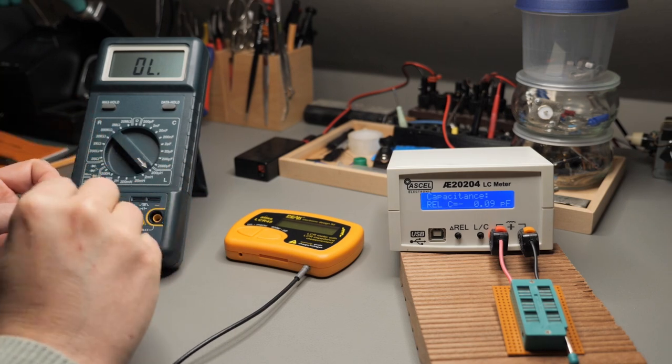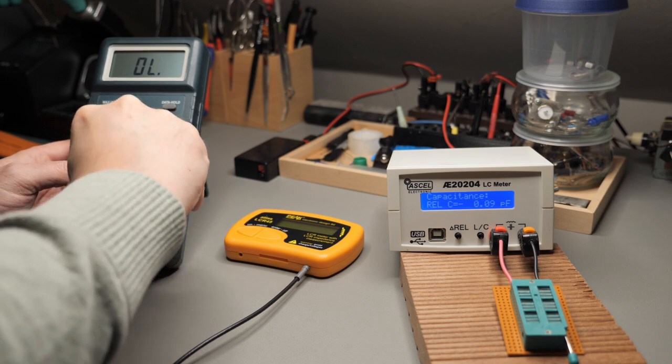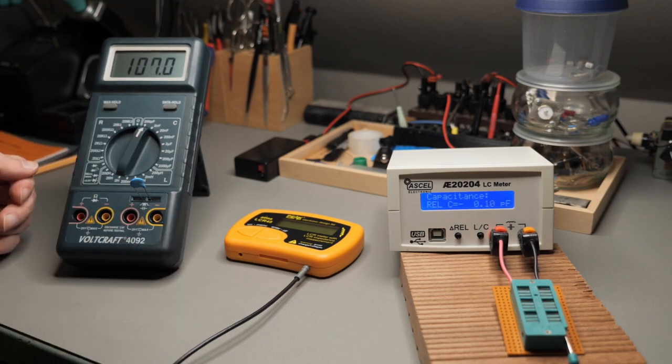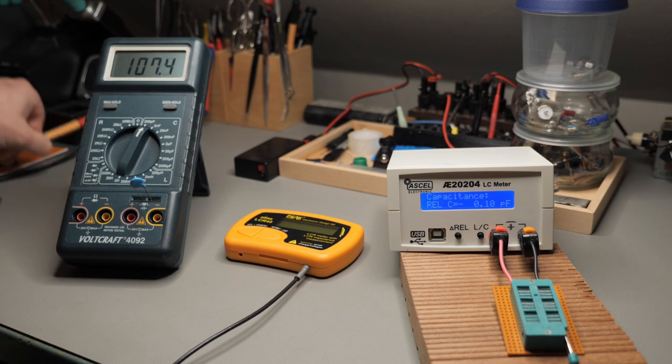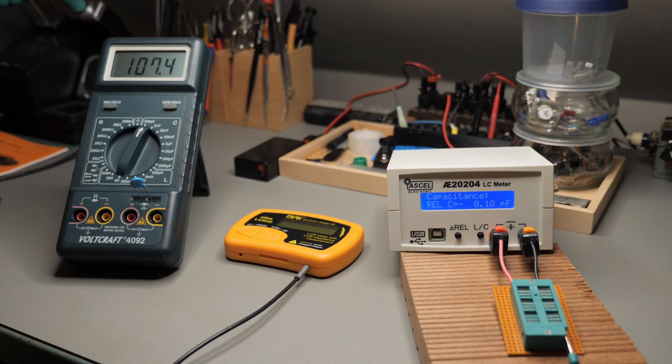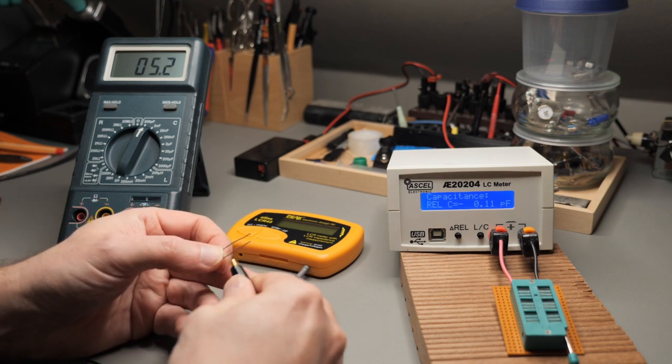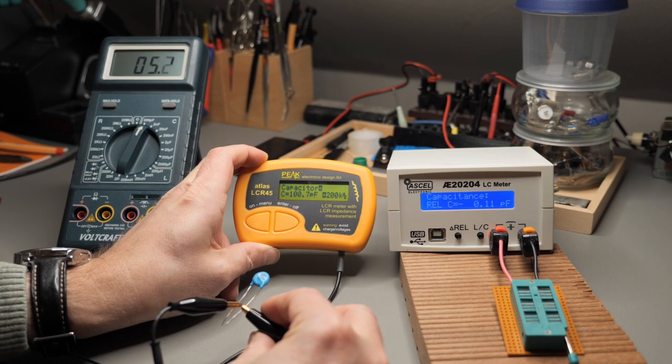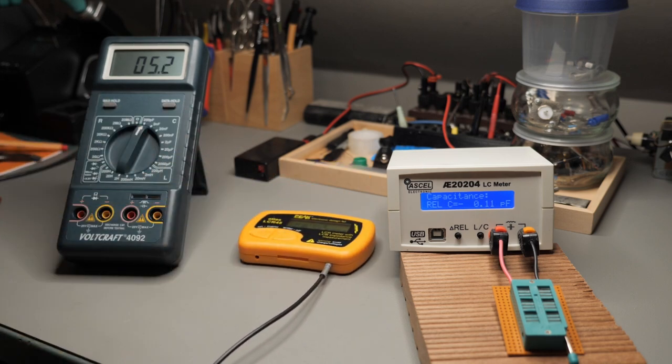So let's start with the classical blue 100 picofarad capacitor we all use and love for our NFED half waves. Of course I have to switch to picofarad. This is not auto probing or sensing anything. It shows us 107.4 picofarad. Then let's hook this up to the ASCAL. And see what it tells us. 100.7 picofarad. No that was the Peak Atlas. I said ASCAL. 100.7 picofarad.